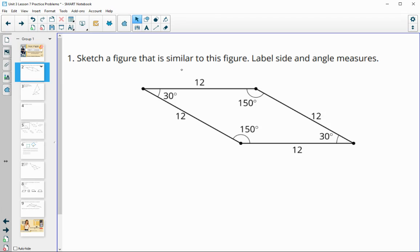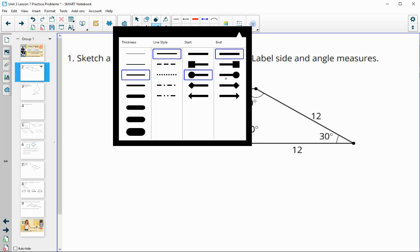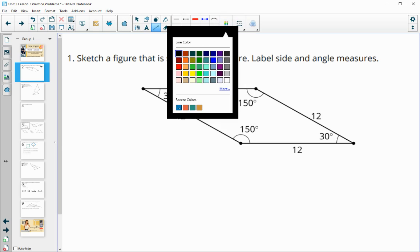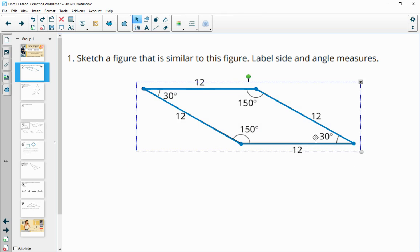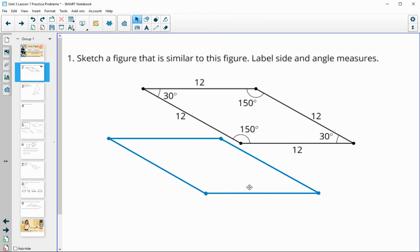Number one wants us to sketch a figure that is similar to the one shown. When you are making your own similar figure, make sure you keep the angles the same. So I'm just going to draw the outline here so that I can guarantee that mine are going to be the same. You can just label yours as the same, but when you make similar figures, the angles should all stay the same size.